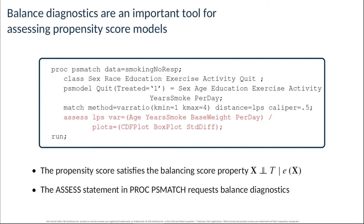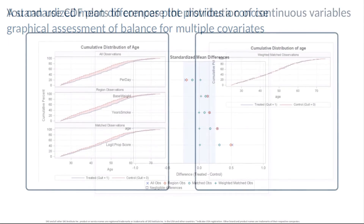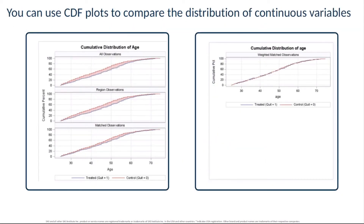When you use PROC PSMATCH in SAS/STAT software to perform propensity score matching, you can use the ASSESS statement to request balance diagnostics. A popular graphical diagnostic for assessing balance is a standardized mean differences plot. This plot shows differences in variable means between the treatment conditions standardized by a pooled estimate of the standard deviation. Standardized mean difference values closer to zero after matching indicate improved balance. The standardized mean differences plot is a quick, convenient way to assess balance across multiple variables.